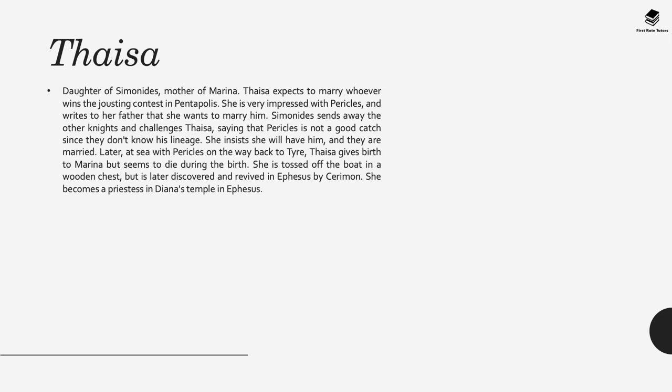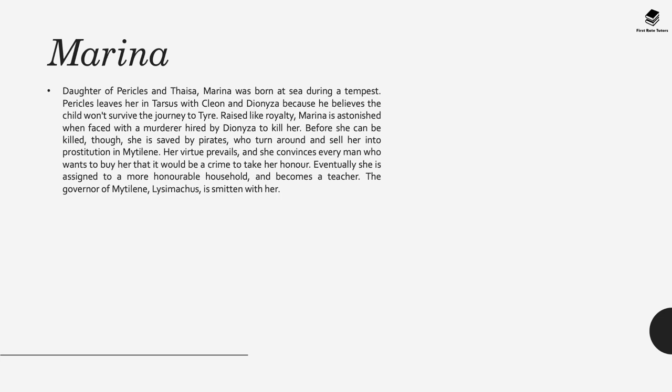Thaisa is the daughter of Simonides and mother of Marina. She expects to marry whoever wins a jousting contest but is really impressed with Pericles and tells her father she wants to marry him specifically. She later travels at sea with Pericles, gives birth to Marina, but seems to die during the birth and is tossed off the boat — though ultimately she survives and becomes a priestess in Diana's temple in Ephesus. Marina is the daughter of Pericles and Thaisa, born at sea during a tempest. Raised like royalty, her virtue prevails even when she is sold into a brothel — she convinces every man who wants to buy her that it would be a crime to take her honour. She is eventually assigned to a more honourable household, becomes a teacher, and ultimately reunites with her father.